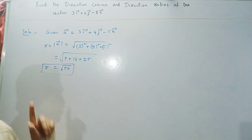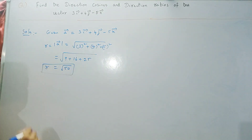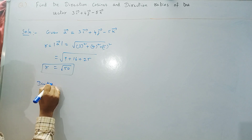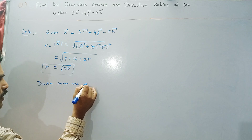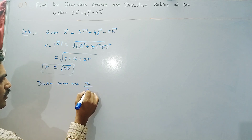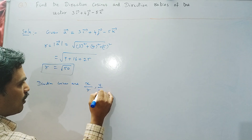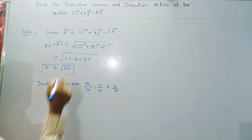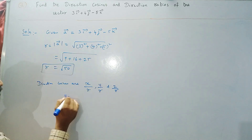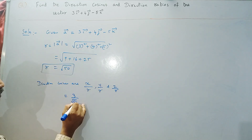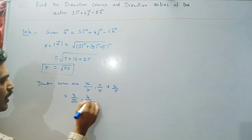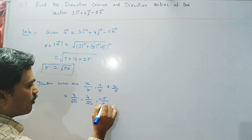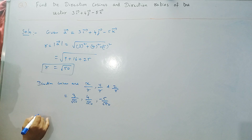Now we find the direction cosines. The direction cosines are x by r, y by r, and z by r. So x is 3, giving 3 by root 50; y is 4, giving 4 by root 50; and z is minus 5, giving minus 5 by root 50. These are the direction cosines.